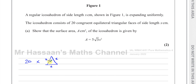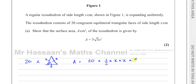Since all side lengths are x, the angles are 60 degrees. The area of a triangle is given by half ab sine C when we don't know the vertical height, so that's the easiest approach. We have 20 triangles times a half times x times x times the sine of the angle between them — that's the area of one triangle, and there are 20 making up the surface area.